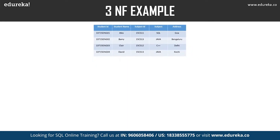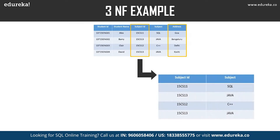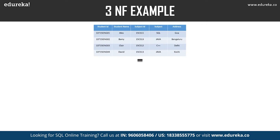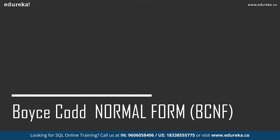To achieve Third Normal Form, we divide the table. The first table stores Student ID, Student Name, Subject ID, and Address — all columns referring to the primary key, Student ID. The second table has Subject ID and Subject columns, where Subject is dependent only on Subject ID and not on Student ID. All non-key attributes are now fully functionally dependent only on the primary key: in the first table, Student Name, Subject ID, and Address depend only on Student ID; in the second table, Subject depends only on Subject ID.